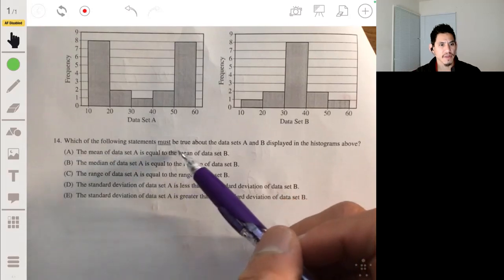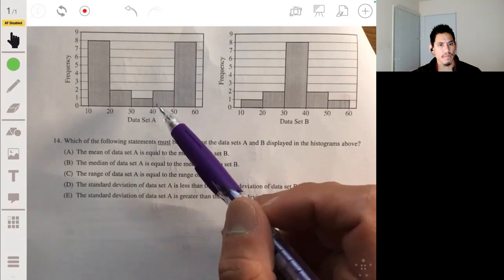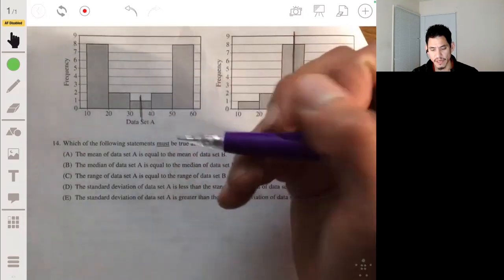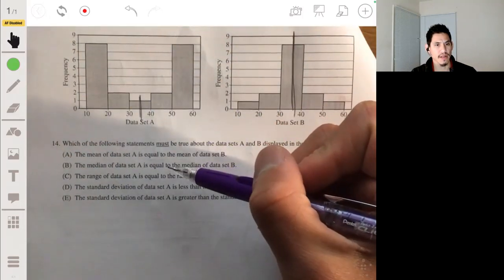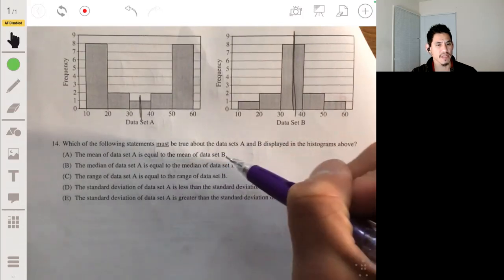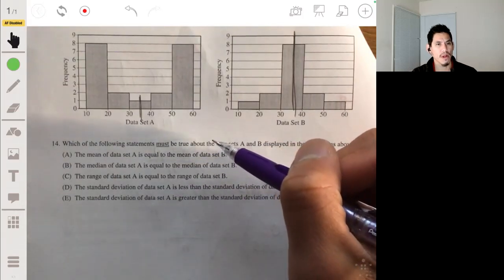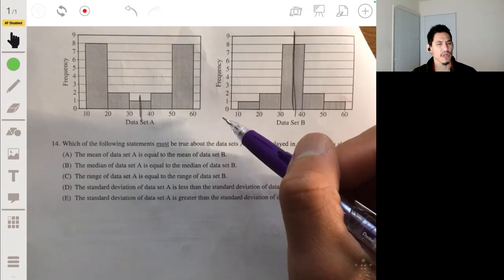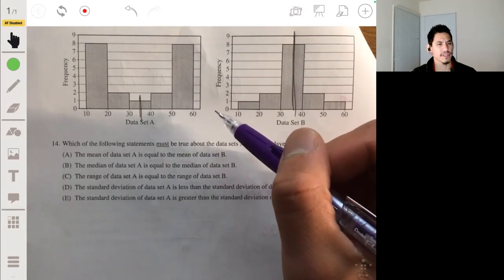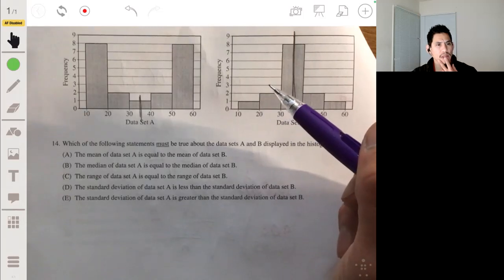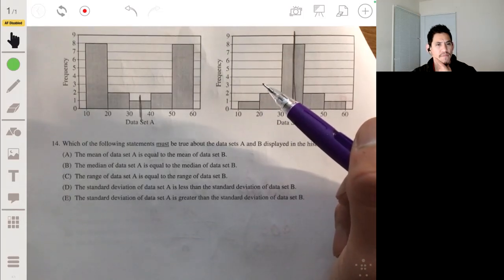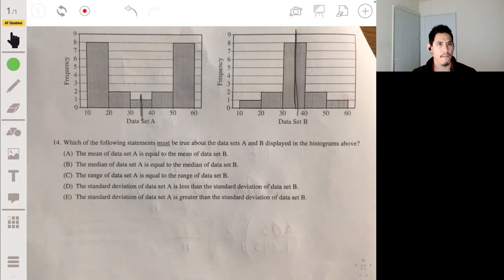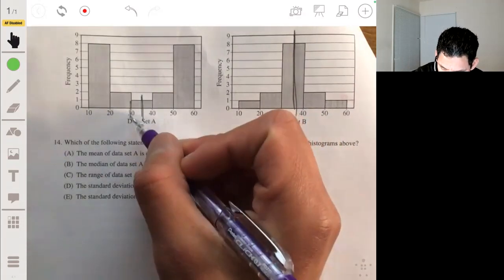So the mean of data set A is equal to the mean of data set B. No, because the mean of data set B will be somewhere in the middle. It's symmetric. And this is not going to be there because it's doing the opposite. So not that. The median of data set A is equal to the median of data set B. This would not be true as well. And this is kind of interesting, this is a good one to think about because we don't know exactly what the values are in here.